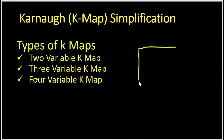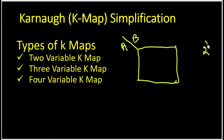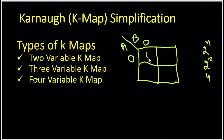So let me create a box for the 2 variable KMap. I will be having 2 variables, so the variable names will be given here. The first variable name is A and the second variable name is B. It will be divided into 2 raised to power N cells — so 2 raised to power 2 gives me 4 partitions. So if A is 0 and B is 0, output will be 0; if A is 0 and B is 1, output will be 1; if A is 1 and B is 0, output will be 2; and if A is 1 and B is 1, output will be 3.